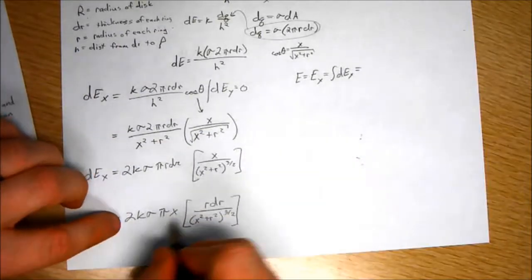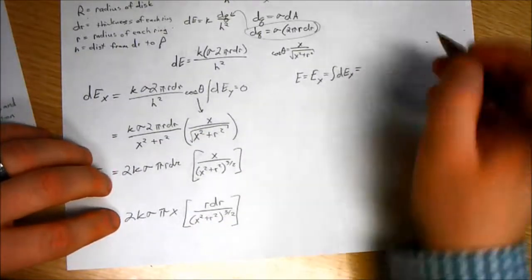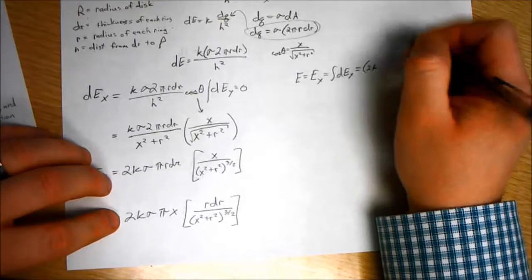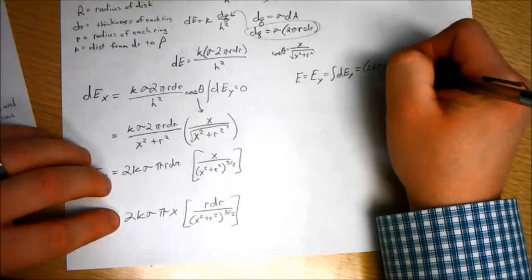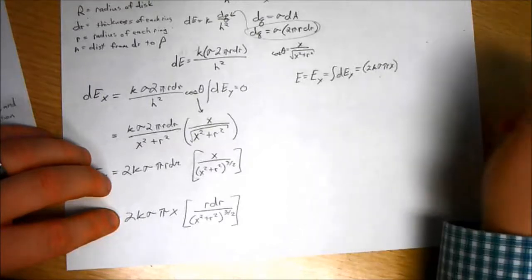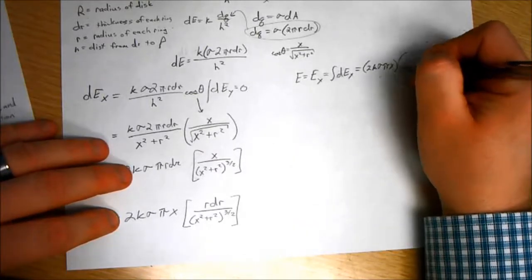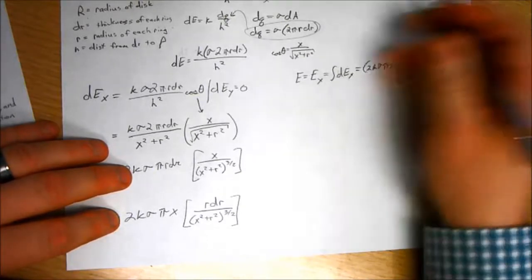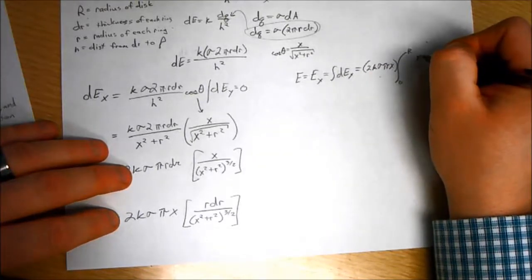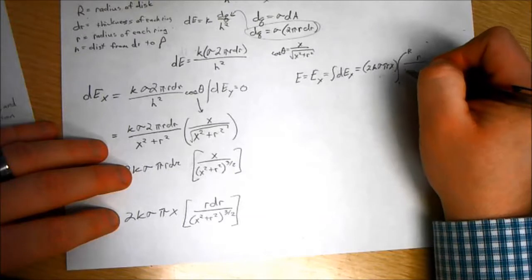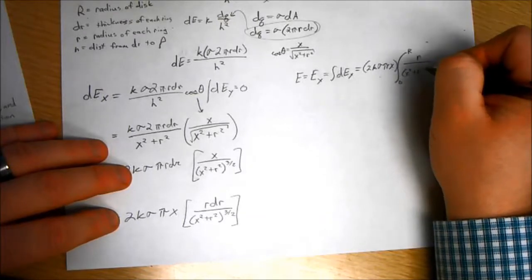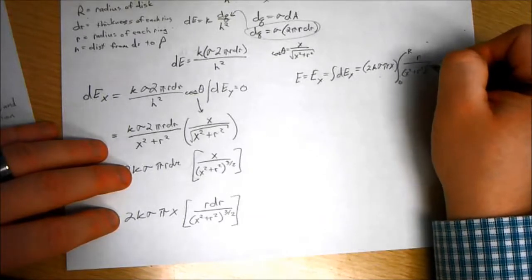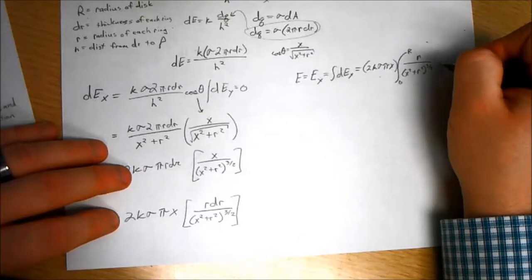None of this stuff matters because it can be pulled out. So, this is the integral of 2K sigma pi X, X is fixed, remember. So, this is the integral from 0 to the radius of the disk of R over X squared plus R squared three halves dr.